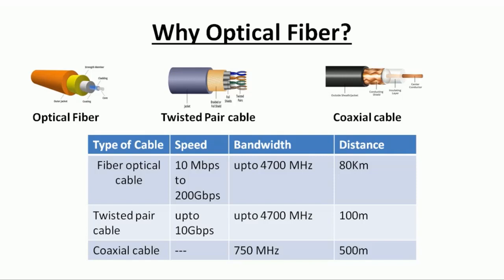In earlier days, twisted pair cable and coaxial cable are copper wire-based wires surrounded by insulation. Both of them transmit telephone, television, and data with electrical signals. The fiber optic cable can deliver the same types of signals with much more bandwidth, faster speed, and higher frequencies.